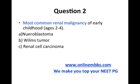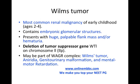Now the second question. The most common renal malignancy of early childhood, between ages 2 to 4 — what is the most likely possibility? Is it neuroblastoma or Wilms tumor? It is the Wilms tumor. The most common renal malignancy in the age group of 2 to 4, it contains embryonic glomerular structures, presents as a palpable flank mass, and is associated with chromosome 11 and the WAGR complex: Wilms tumor, aniridia, genitourinary malformations, and mental motor retardation.